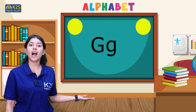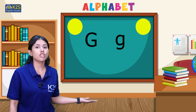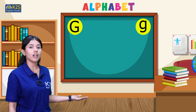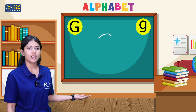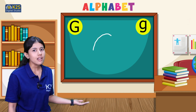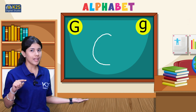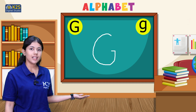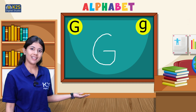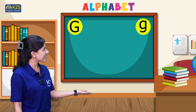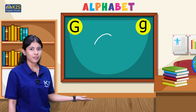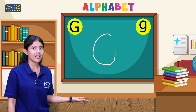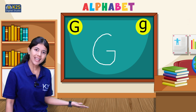So this is the way how we write letter G. You have to first make a curve, then a sleeping line, and then a standing line. A curve, then sleeping line, and then standing line.